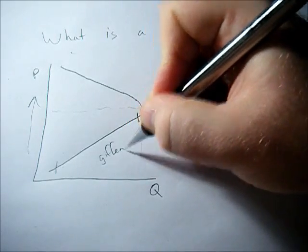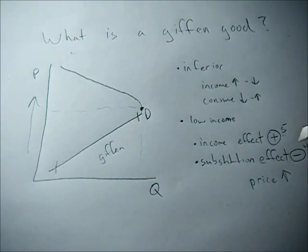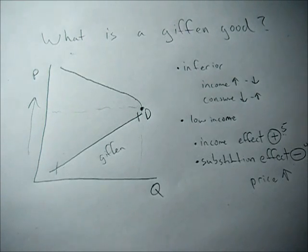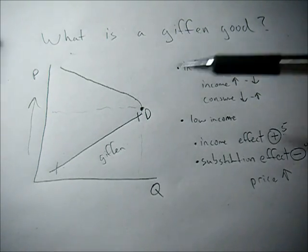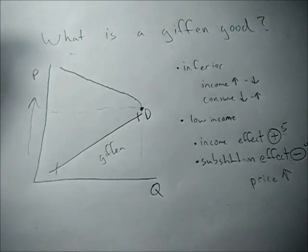However along this range right here it's a Giffen Good. And along this range the income effect is dominating the substitution effect. I'll do a more advanced video later on showing indifference curves and budget constraints. But this is kind of a basic video explaining what a Giffen Good is and how we get to it.